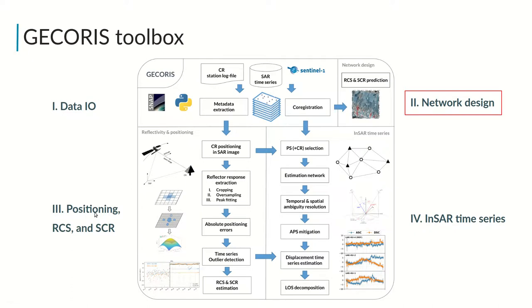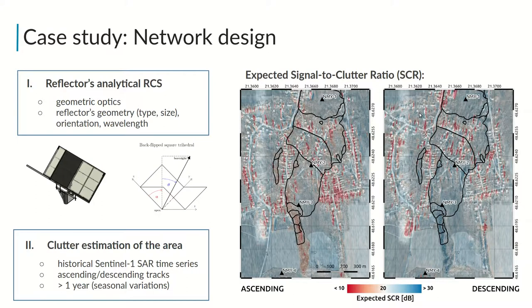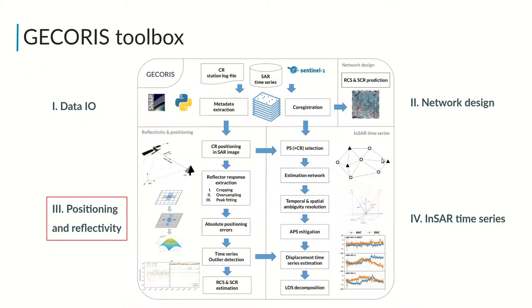GECORIS contains three primary modules. The first module is for network design. One can compute the expected radar cross-section of the reflector given its geometry, and estimate the clutter level of a particular site before reflector installation using historical SAR data, to obtain maps of the simulated signal-to-clutter ratio for optimizing the reflector placement.